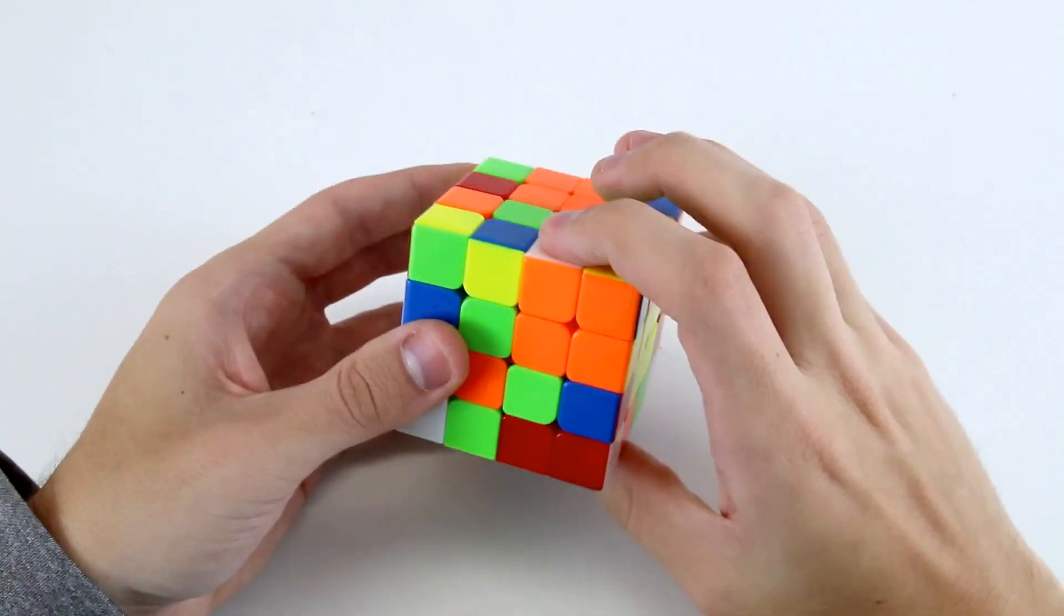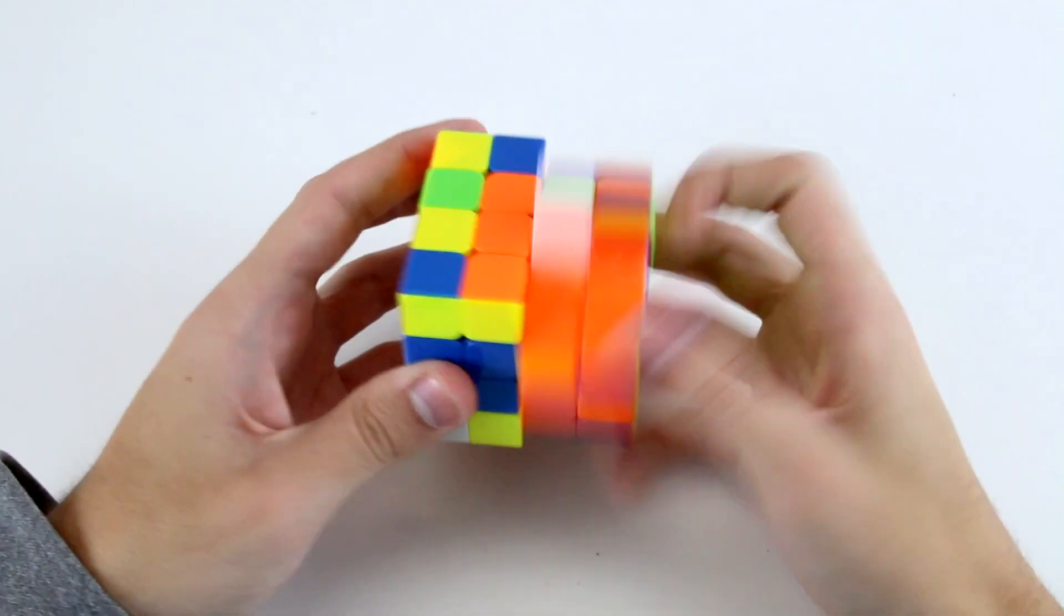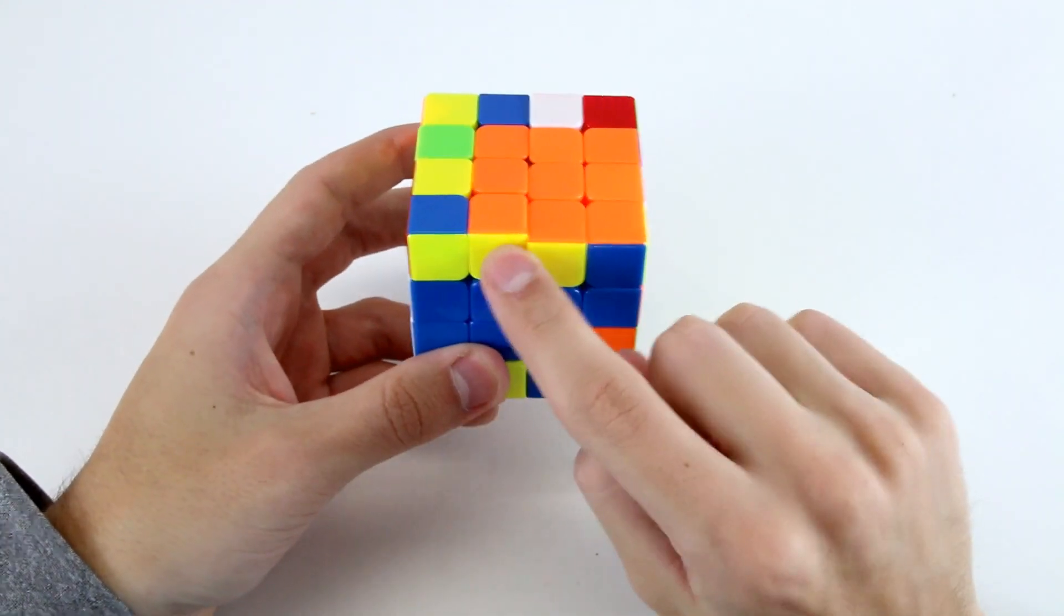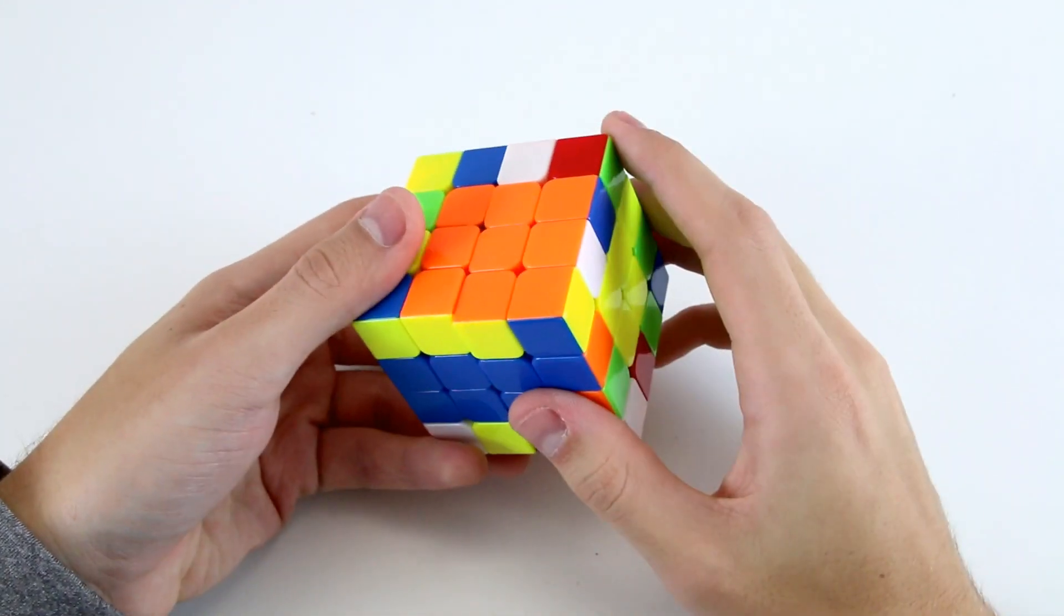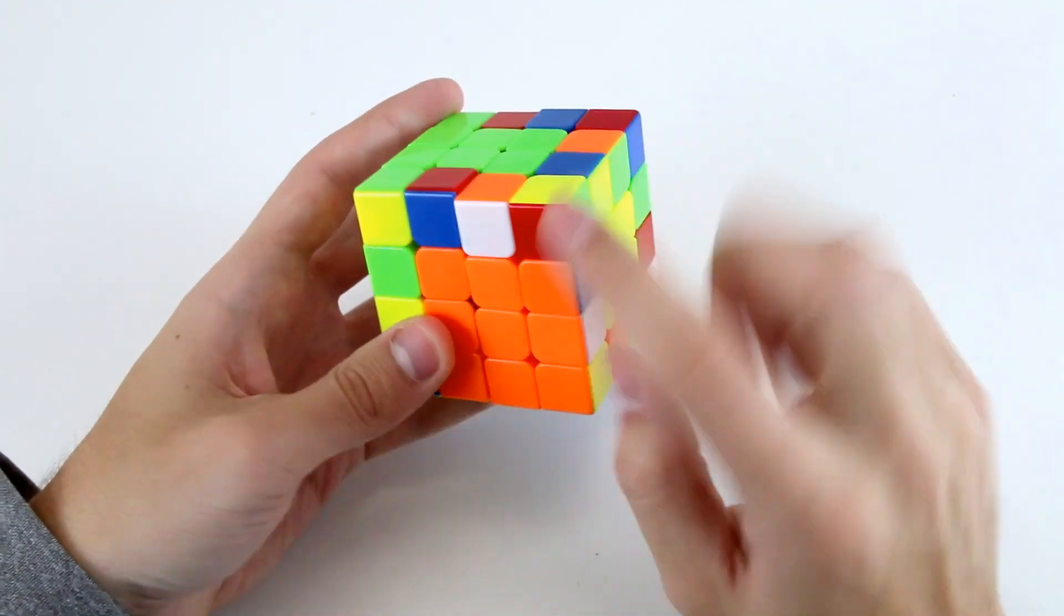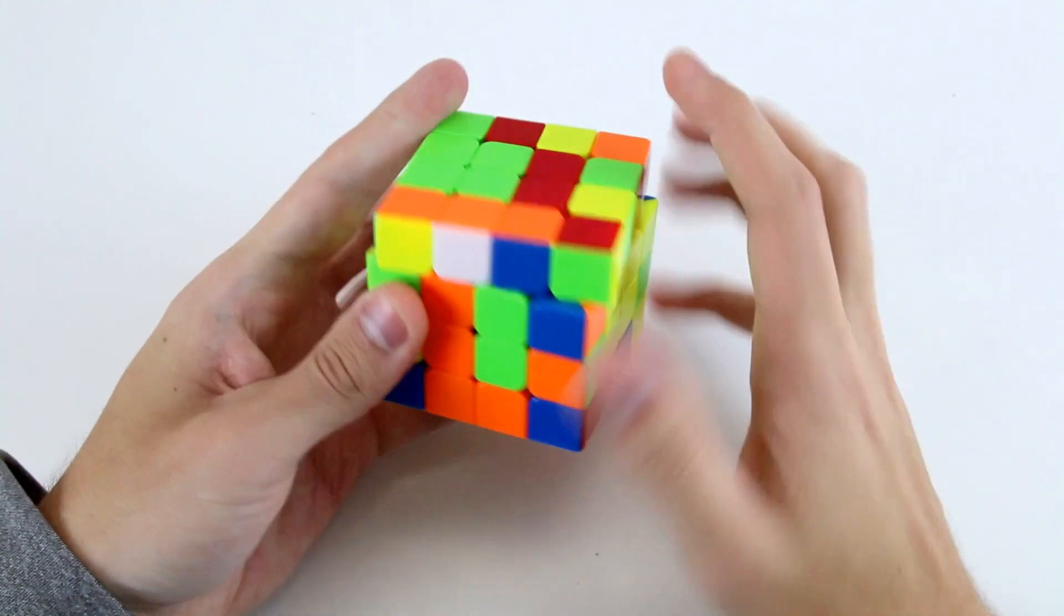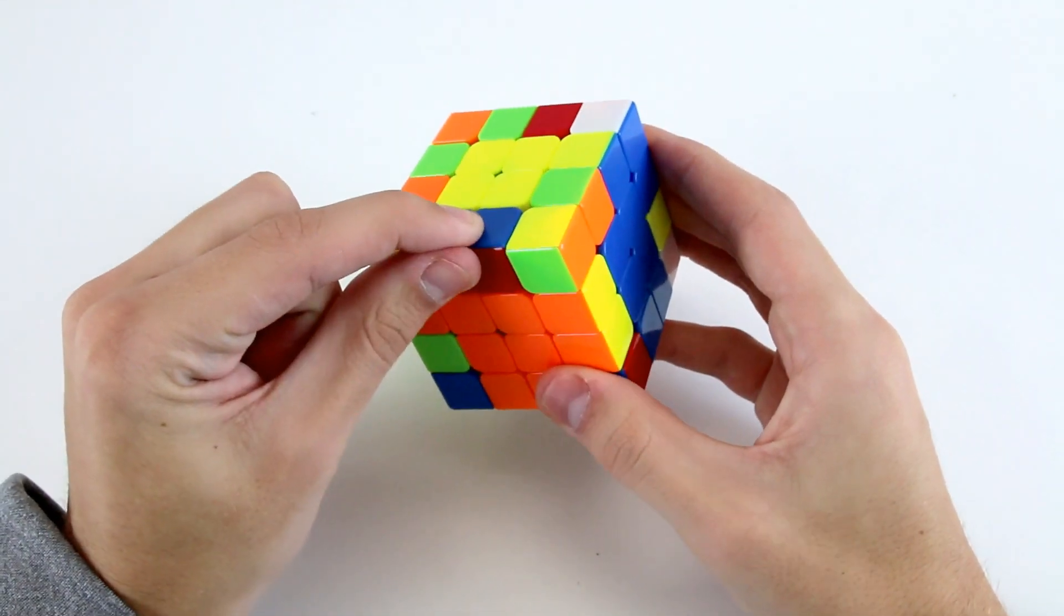Now I've got my last two centers, like so. And now I've got this solved pair here, so I don't want to disturb it. I don't want to scramble it. So I can do the last cross edge something like this. And as I was doing that, this one was formed as well.